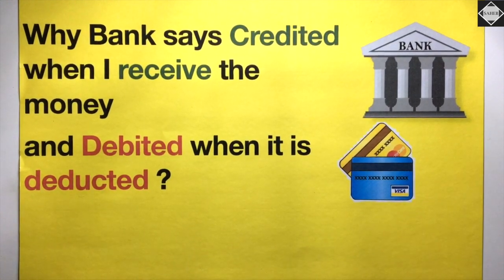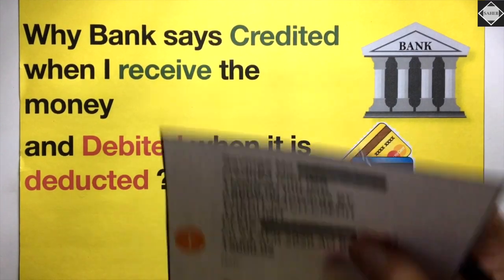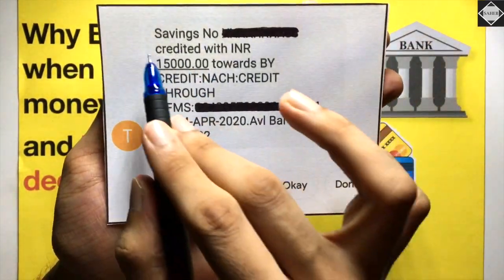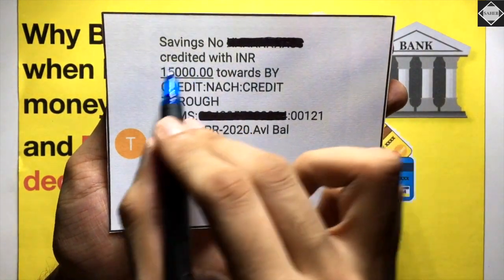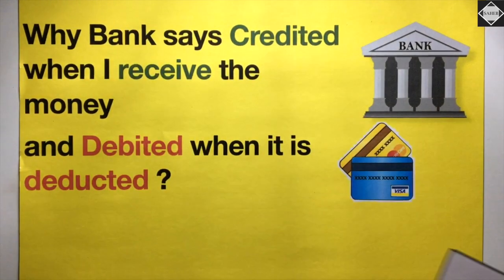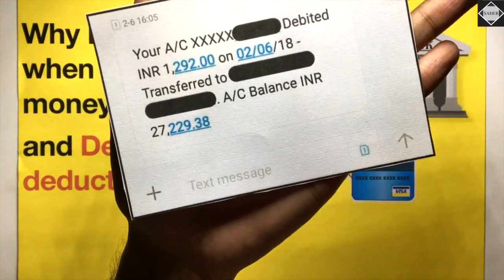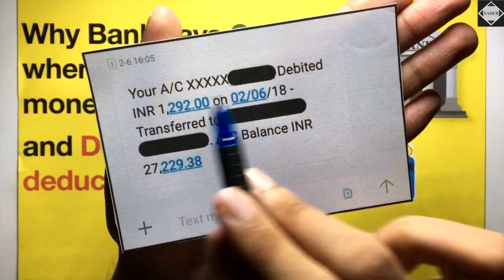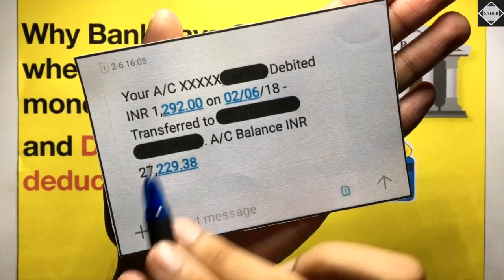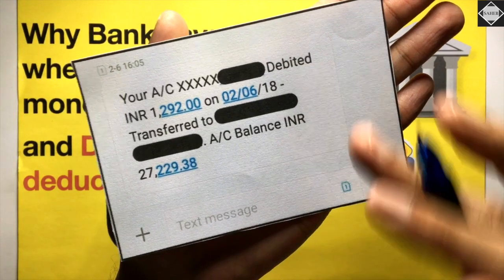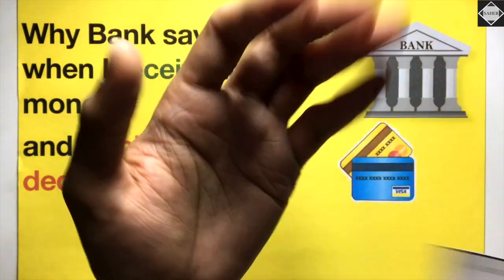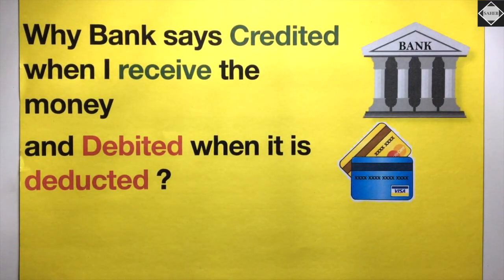For example, if you have deposited 15,000 in your bank, you get a message saying your account has been credited with 15,000 rupees. And if you did some online shopping on Amazon, you will get a message saying your account has been debited with 1,292 rupees on a certain date, with the transaction number.